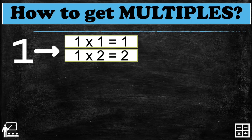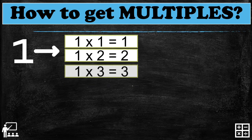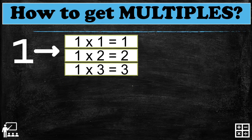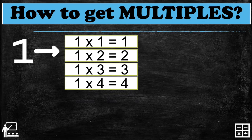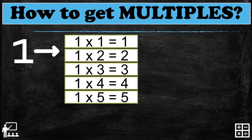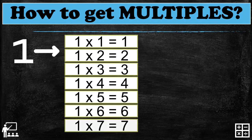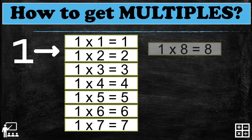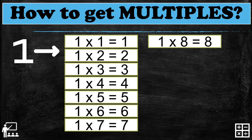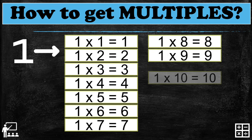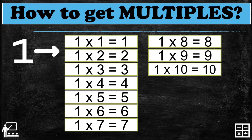Let's start: one times one equals one, one times two equals two, one times three equals three, one times four equals four, one times five equals five, one times six equals six, one times seven equals seven, one times eight equals eight, one times nine equals nine, one times ten equals ten. Now let's determine which is the one number, another number, and the product.